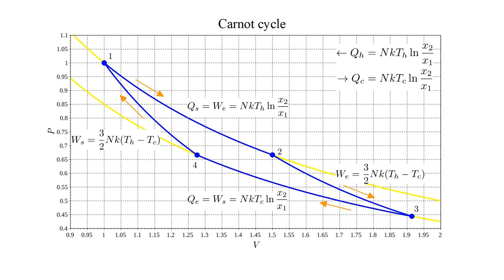Isothermal compression then takes the system from state three to state four. Work WS is done on the system and converted to heat QE transferred to the environment, equal to NKT cold natural logarithm X two over X one.